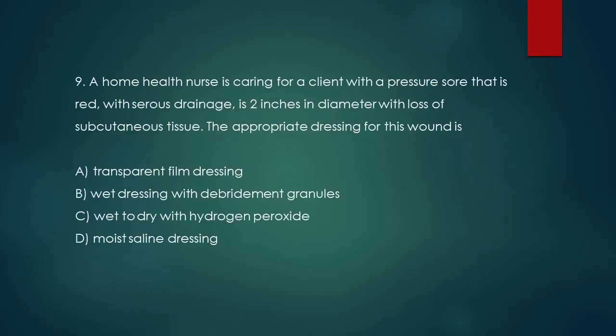Question 9. A home health nurse is caring for a client with a pressure sore that is red, with serous drainage, is 2 inches in diameter with loss of subcutaneous tissue. The appropriate dressing for this wound is: A. Transparent film dressing. B. Wet dressing with debridement granules. C. Wet to dry with hydrogen peroxide. D. Moist saline dressing.